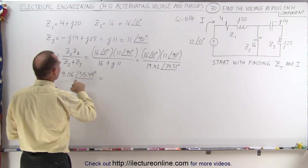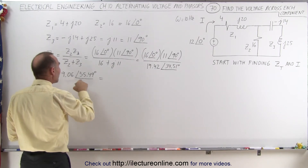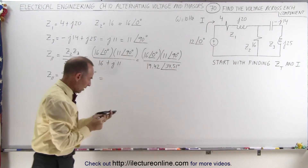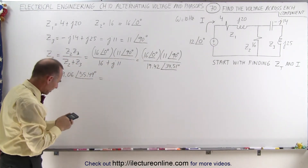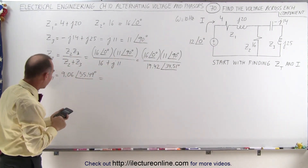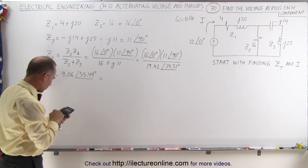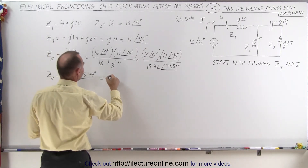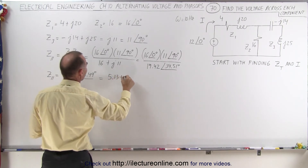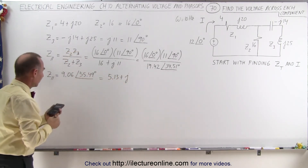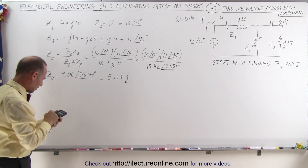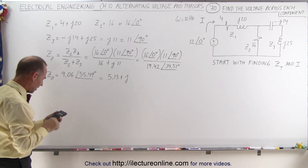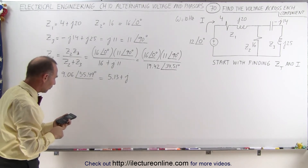We're going to write this in terms of its real and imaginary parts because we're going to have to add it to impedance Z1. Taking the cosine of 55.49 degrees times 9.06 gives 5.13 for the real part. The imaginary part uses the sine of 55.49 degrees times 9.06, giving 7.47. So the parallel branch impedance is 5.13 + j7.47.